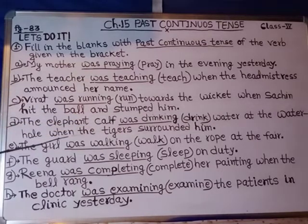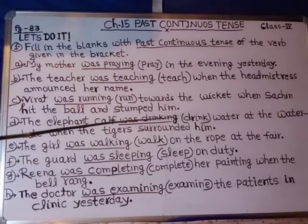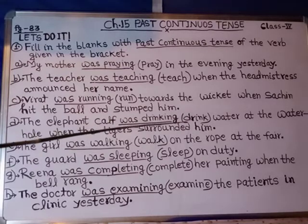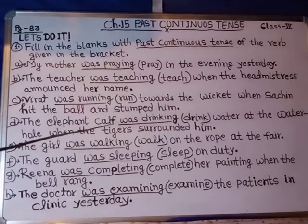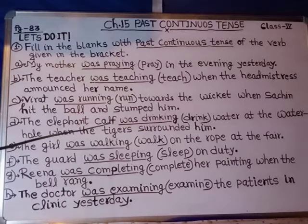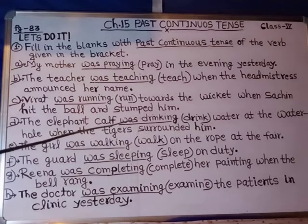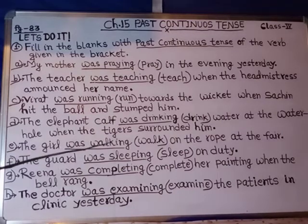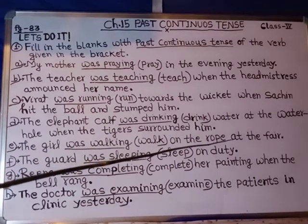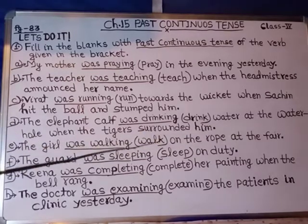D: The elephant calf was drinking water at the water hole when the tiger surrounded him. With the verb 'drink' we added ing, and 'was' is used because we are speaking of only one elephant calf, which is singular. So the answer is: was drinking.